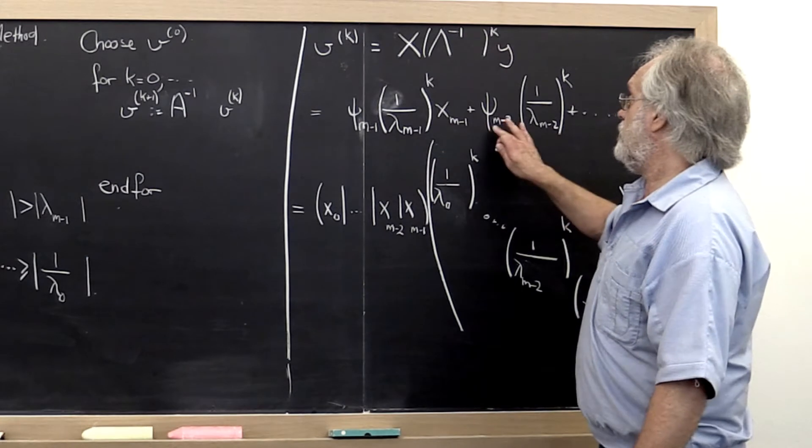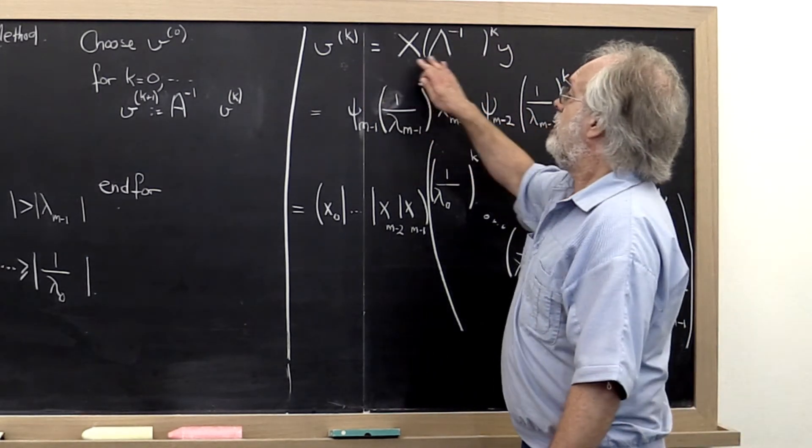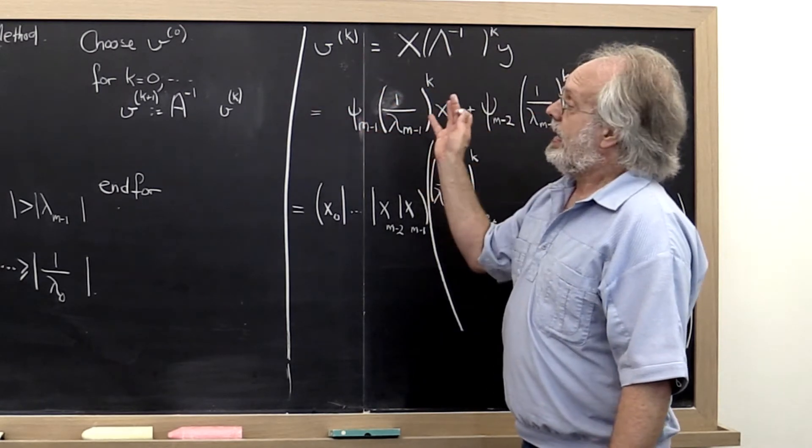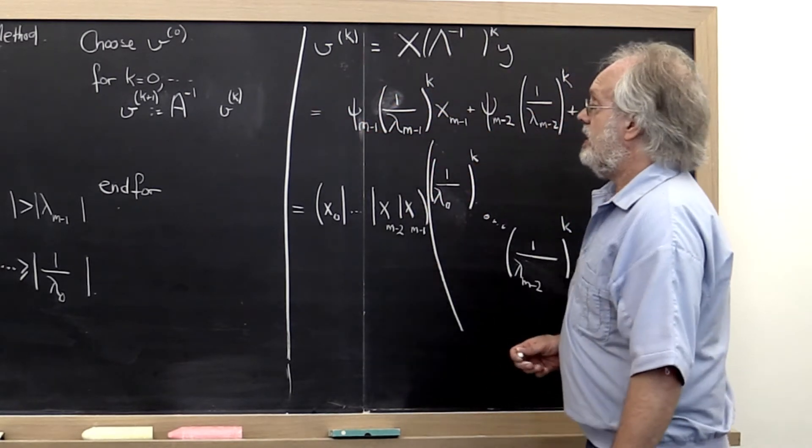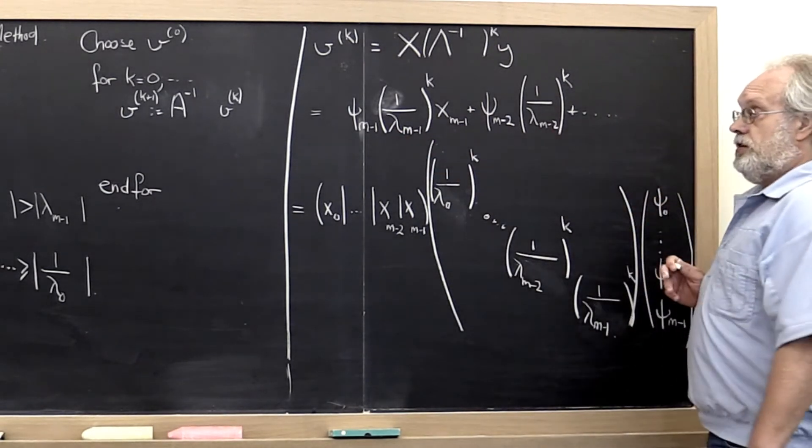These are then the coefficients associated with those terms. And if we've already hit our vector v k times with matrix A inverse, then we end up with this expression right here.